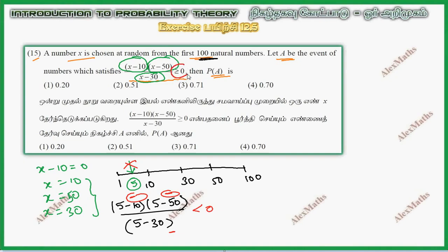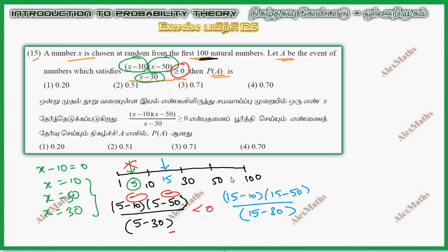Now for the next region, for example x equals 15: (15 minus 10)(15 minus 50) divided by (15 minus 30). This is positive, negative, negative — two negatives cancel to give plus, so this region from 10 to 30 is greater than 0. This is valid.